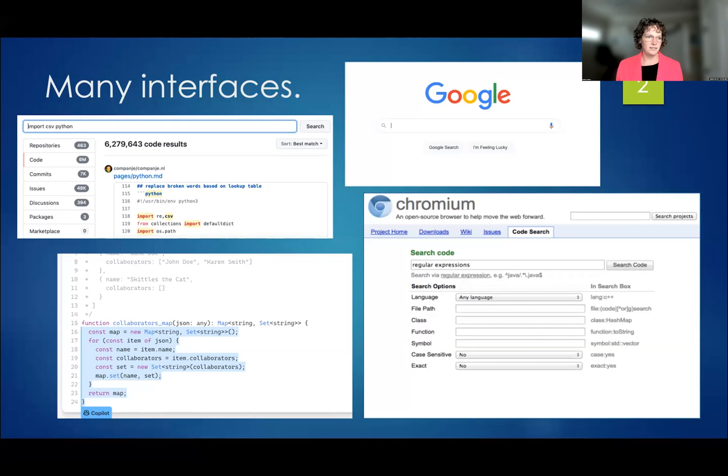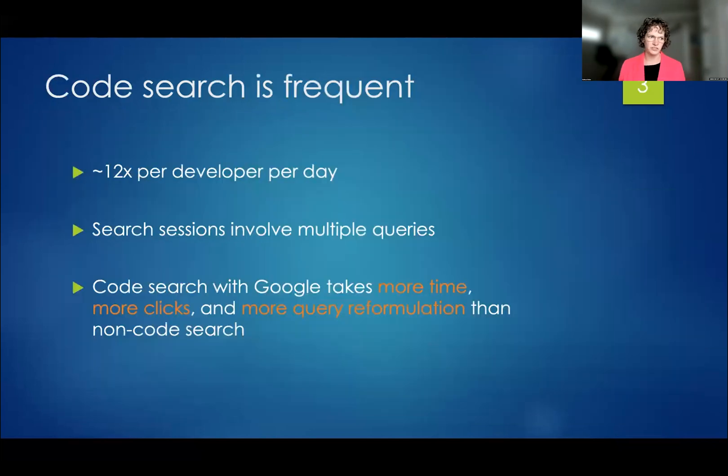So code search, it turns out, is happening all the time. And we did a study of developers at Google, and it turns out that it was happening 12 times per developer per day. And this may not sound like a lot, except when I'm talking about 12 times a day, I mean search sessions.